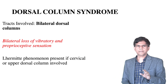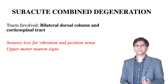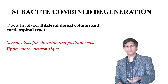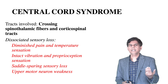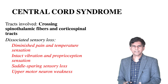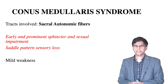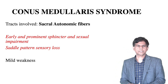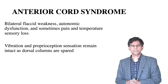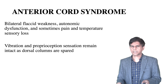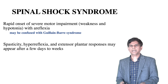Brown-Séquard (hemi-cord) syndrome: ipsilateral and contralateral paresis, impaired vibration, proprioception, pain, and temperature sensation loss. Dorsal column syndrome: bilateral loss of vibration and proprioceptive sensation, Lhermitte phenomenon. Subacute combined degeneration: bilateral dorsal column and corticospinal tract involvement with loss of vibration. Central cord syndrome: dissociated sensory loss with diminished pain and temperature, intact vibration, saddle-sparing sensory loss. Conus medullaris: saddle-pattern sensory loss, sphincter and sexual impairment. Anterior cord syndrome: bilateral flaccid weakness, autonomic dysfunction, with vibration and proprioception intact as dorsal columns are spared. Spinal shock early phase can be confused with Guillain-Barré syndrome, but spasticity and hyperreflexia appear after days to weeks.